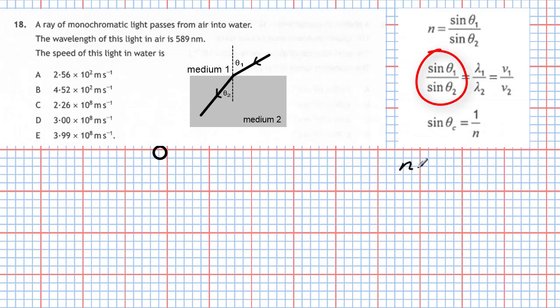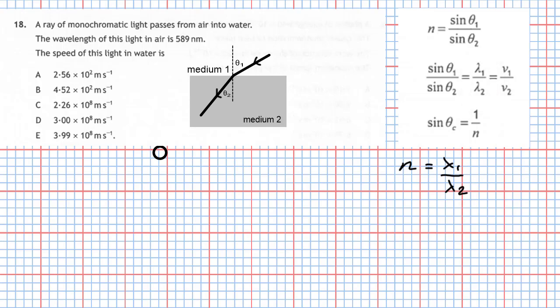So instead of sine theta 1 over sine theta 2, we use the refractive index. The refractive index equals lambda 1 (wavelength in air) divided by lambda 2 (wavelength in water), and also the refractive index equals the speed of light in air divided by the speed of light in the medium. It all depends on us finding the refractive index, and the clue is in the wavelength.